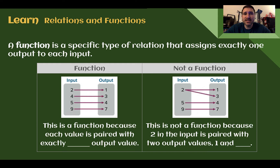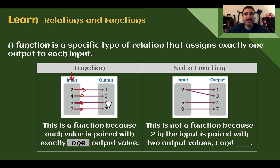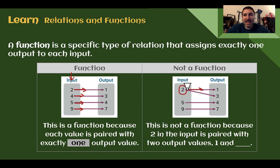A function is a specific type of relation that assigns exactly one output to each input. Here we have an example of a function and of not a function. In the function, each input only goes to one output — each value of the input is paired with exactly one output value. Compare this to something that is not a function: the input 2 goes to 1 and also to 3, giving two different output values, making it no longer a function.